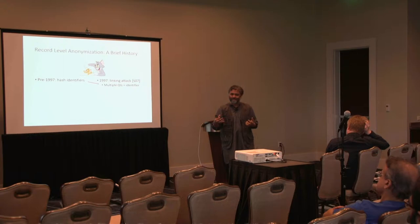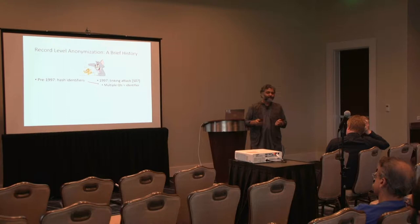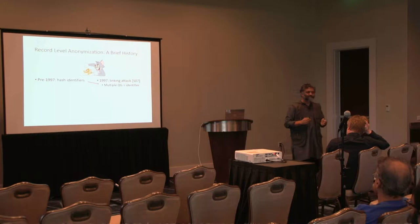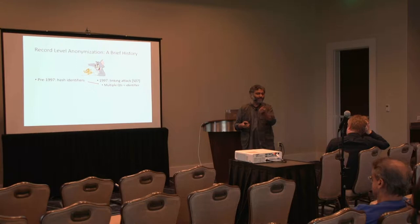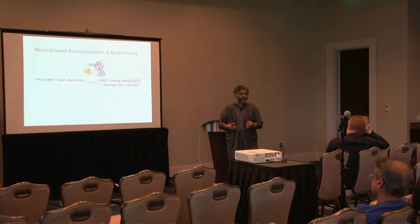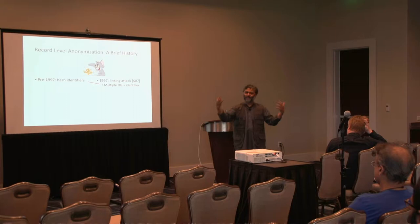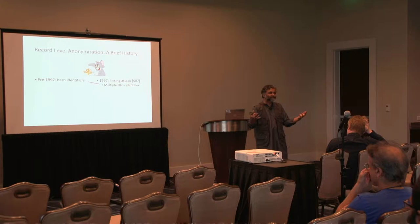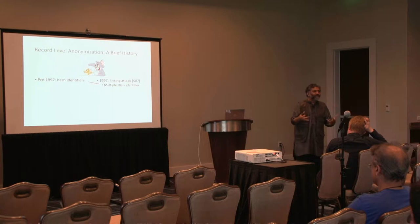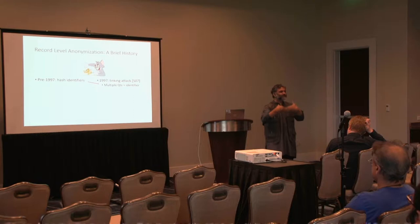In 1997, Latanya Sweeney, then at MIT, carried out the so-called linking attack. What she did was observe that by combining demographic features like date of birth, gender, and zip code, she could join that information with publicly available voter registration records and found that she could identify a large fraction of people. In particular, she actually found all the medical records of the then governor of Massachusetts, William Weld, and showed how easy it was to combine anonymized data with public data. That became a vehicle to jumpstart privacy research beyond that point.